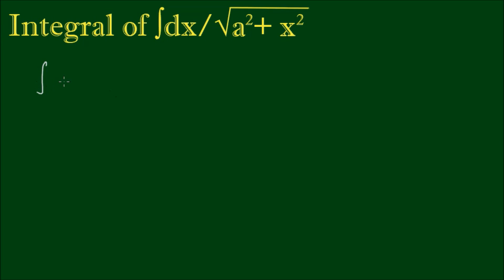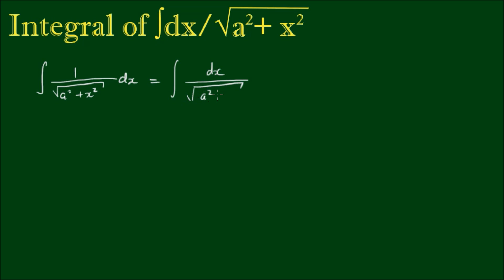Let's have a look at some of the strategies we can use to integrate the function 1 over the square root of a squared plus x squared. We often write this as the integral of dx over the square root of a squared plus x squared. Since we have an x squared term and a constant squared term in the denominator, this implies we would normally look for a trigonometric substitution, and this is the first strategy we can use.